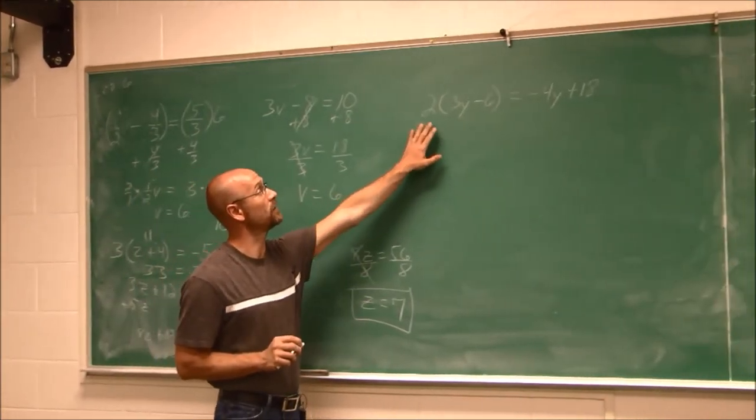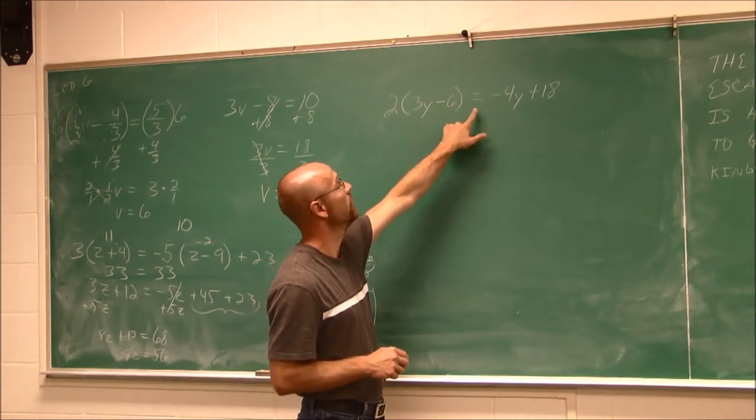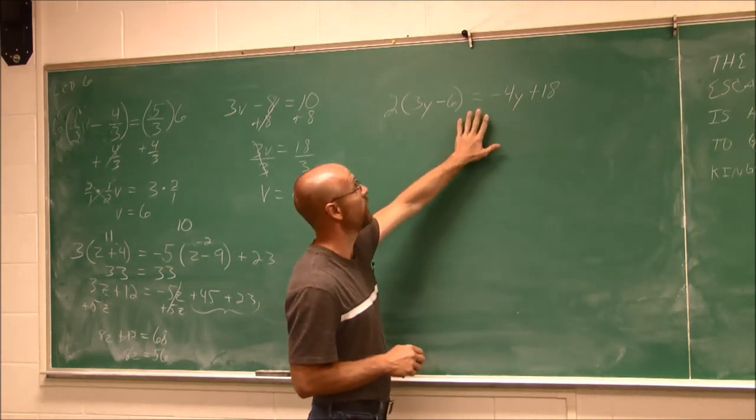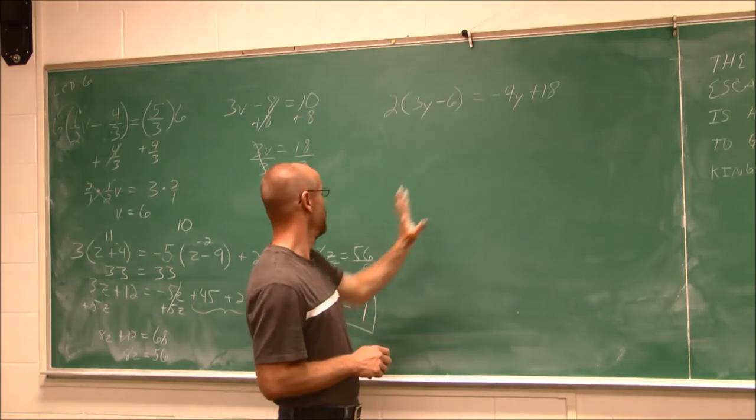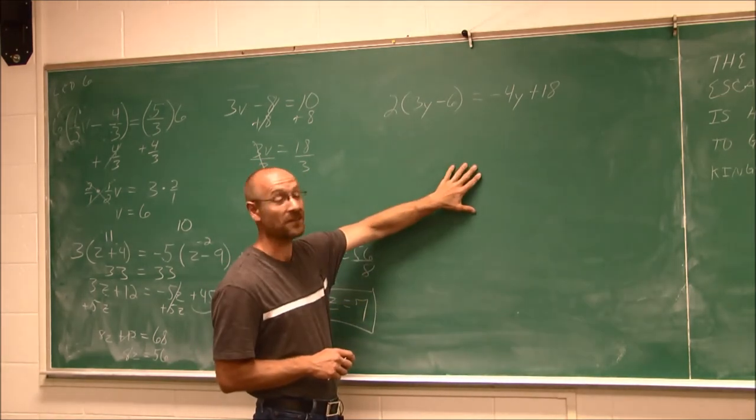Now, I have an example right here. 2 times the quantity 3y minus 6 equals negative 4y plus 18. Why don't you go ahead and try this one on your own? It's very similar to the last one. Good luck and keep practicing.